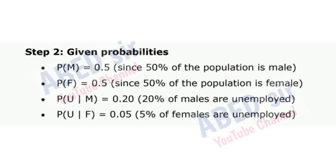Step 2: Given probabilities. P(M) = 0.5, since 50% of the population is male. P(F) = 0.5, since 50% of the population is female. P(U|M) = 0.20, since 20% of males are unemployed. P(U|F) = 0.05, since 5% of females are unemployed.